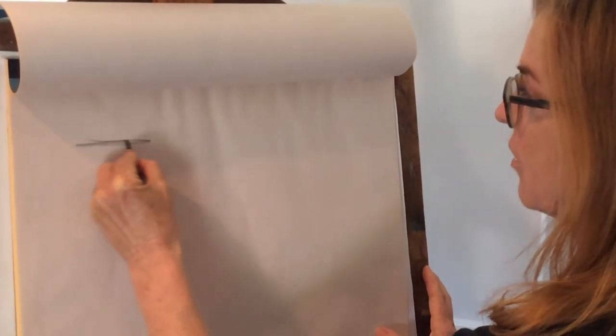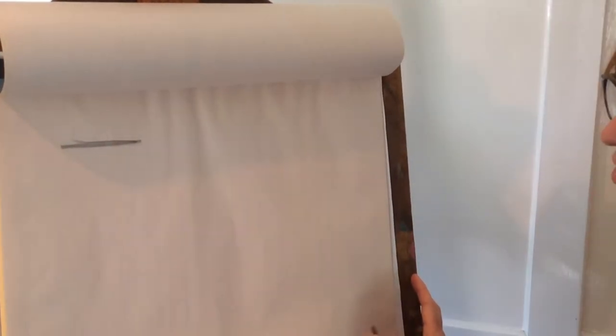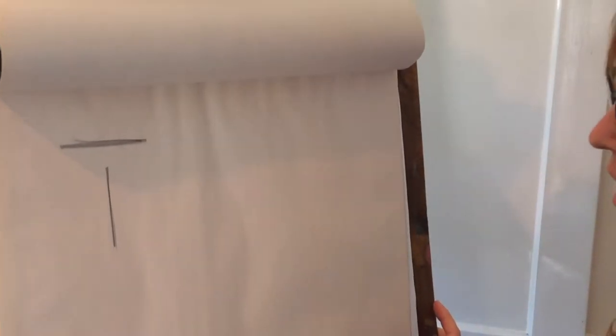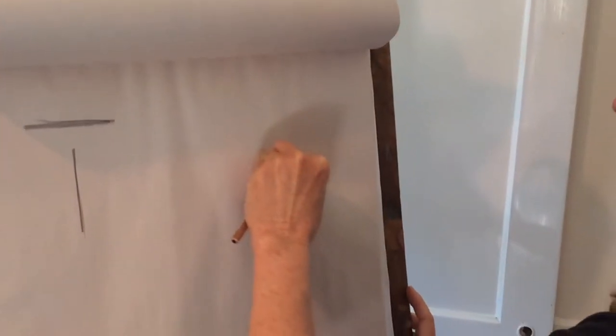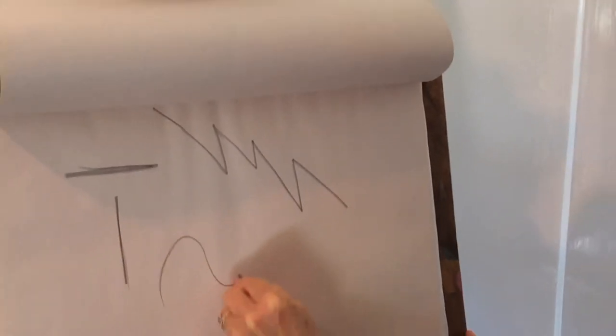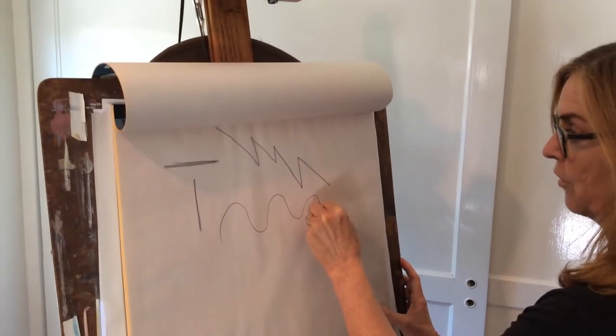There's horizontal lines. See, that's going across. There's vertical lines going up and down. There's crooked lines, like I'm climbing a mountain. There's curvy lines, like I'm traveling over the hills.